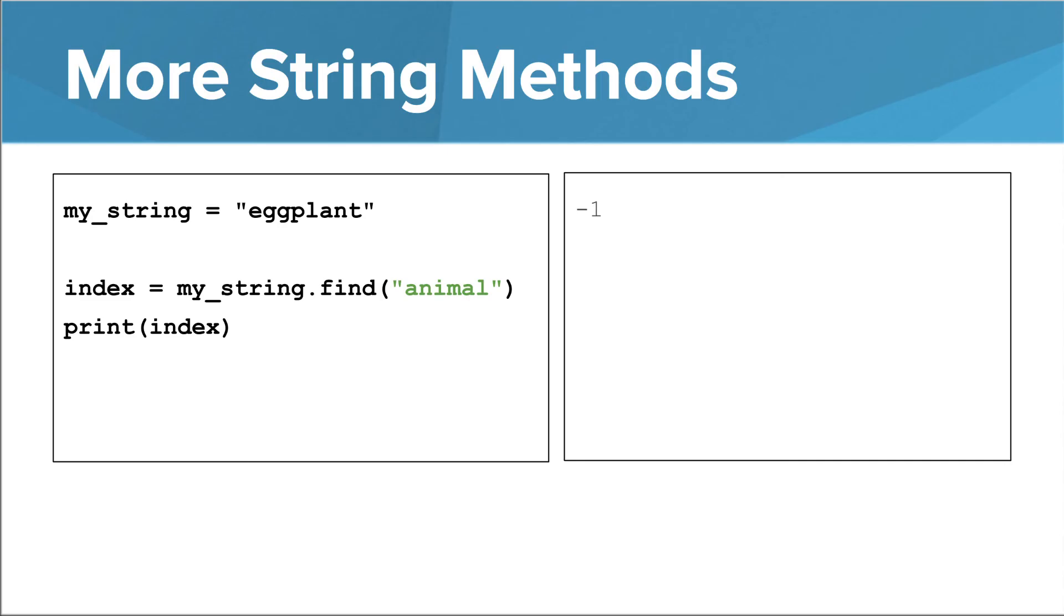If the argument string is not found, the method returns negative 1. Note that even though negative 1 is technically a valid index, it is still used as the value that represents the case where the argument string wasn't found. If the argument string was found, the return value will be 0 or greater.